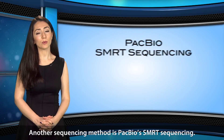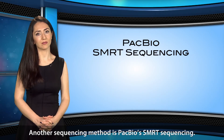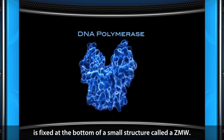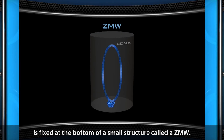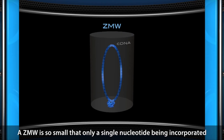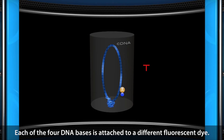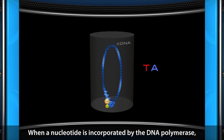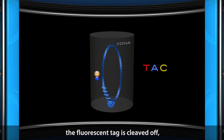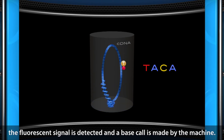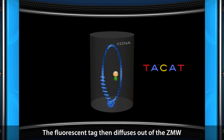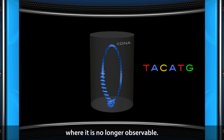Another sequencing method is PacBio's SMRT sequencing. With this technique, DNA polymerase enzyme is fixed at the bottom of a small structure called the ZMW. A ZMW is so small that only a single nucleotide being incorporated by the DNA polymerase can be observed. Each of the four DNA bases is attached to a different fluorescent dye. When a nucleotide is incorporated by the DNA polymerase, the fluorescent tag is cleaved off, the fluorescent signal is detected, and a base call is made by the machine. The fluorescent tag then diffuses out of the ZMW, where it is no longer observable.